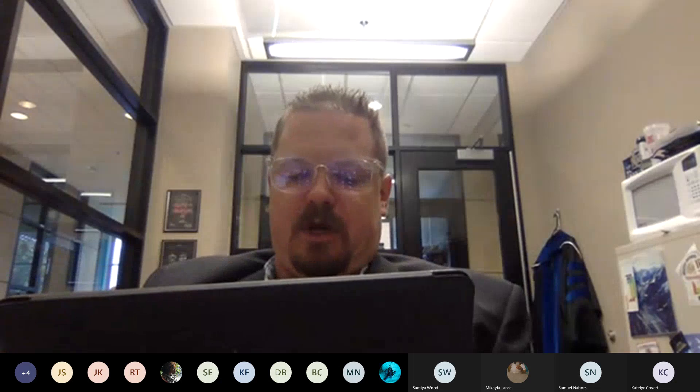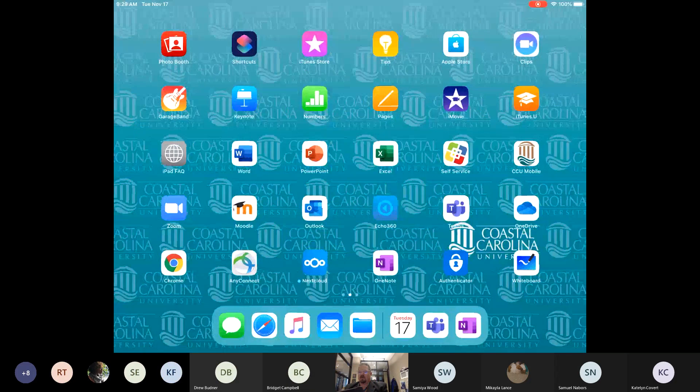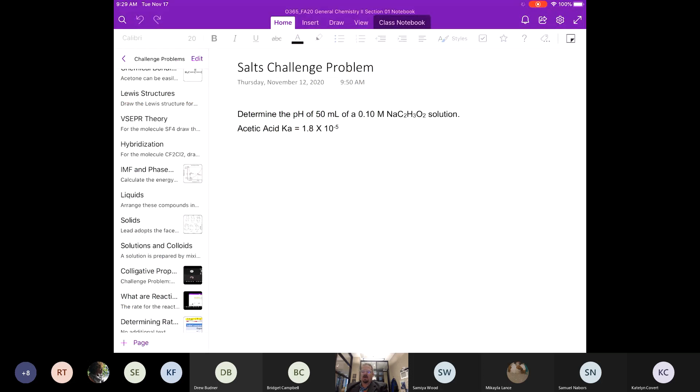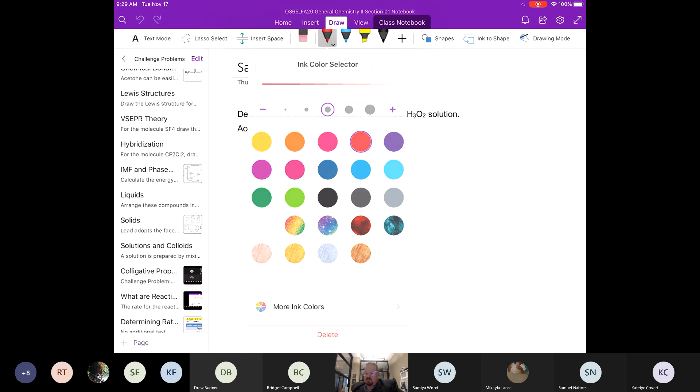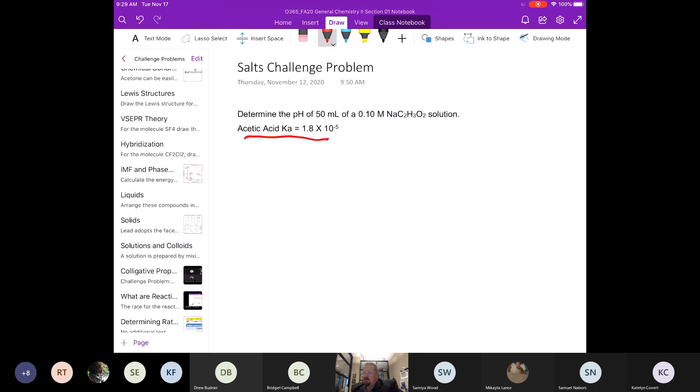Let's look at today's challenge problem for the salts. We want to determine the pH of 50 milliliters of 0.10 molar sodium acetate solution, where we have the accompanied acetic acid Ka.